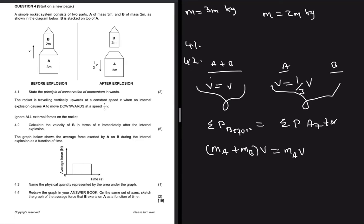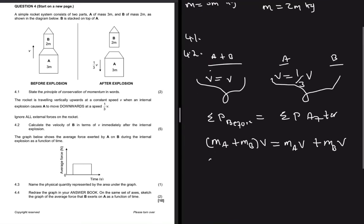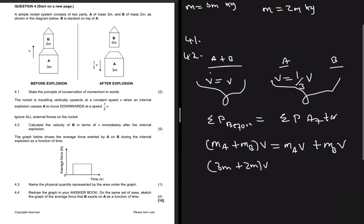After the explosion, A goes down so we have mass of A and the velocity of A. They've exploded so they're no longer together - the masses are apart. We have the mass of B and the velocity of B. Mass of A is 3m plus mass of B which is 2m, and the velocity is v.